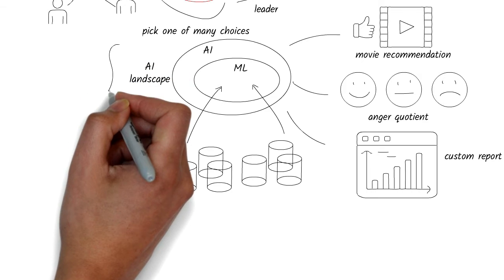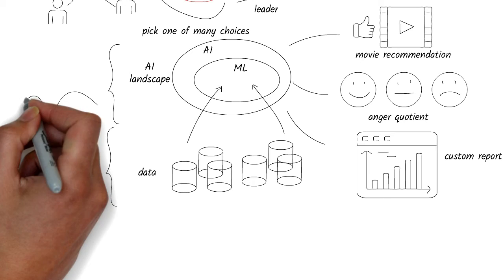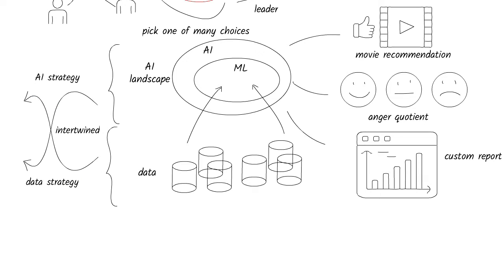This means that the AI strategy and the data strategy of the organization are tightly intertwined, and you cannot have AI strategy without a data strategy.